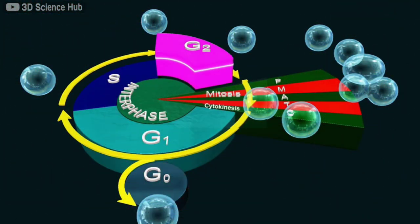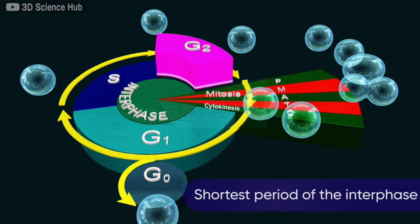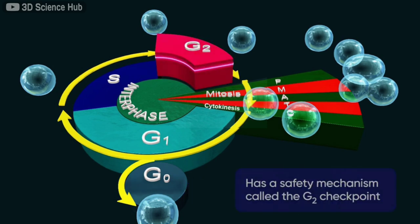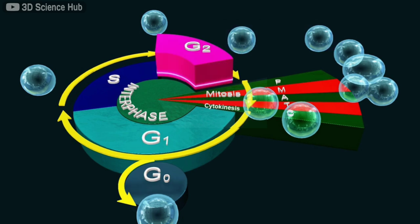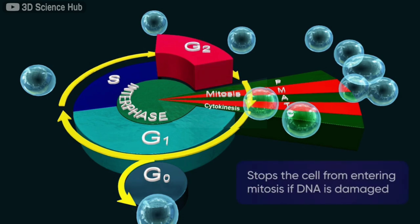Despite being the shortest period of the interphase, it also includes a safety mechanism called the G2 checkpoint. This mechanism makes sure that everything is OK for the cell to enter the M phase. The G2 checkpoint will stop the cell from entering mitosis if the DNA is damaged.